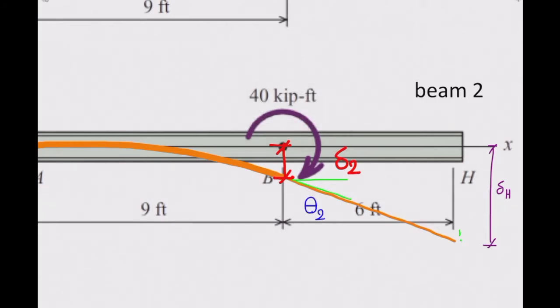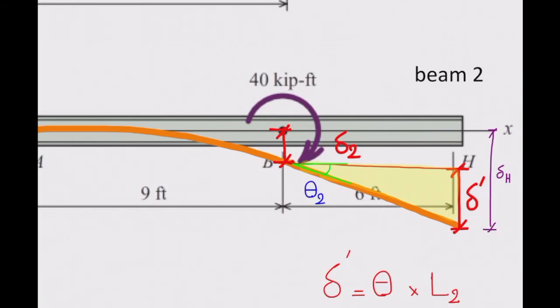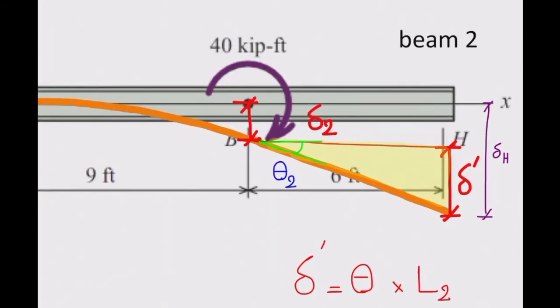It deforms like this. If I know how much is the theta or slope of this beam at that point, I can form a triangle like that. In that triangle, tangent of theta 2 is delta prime divided by distance from B to H. However, we can simplify that more. Instead of saying tangent of theta, I can say theta is equal to that, because the deformation or angle is very small. So here I can write it like that: delta prime is theta times L2. Or if you want, you can replace that: delta prime is equal to tangent of theta times L2. That will give you the same number as long as this theta is small.